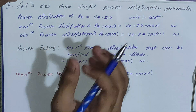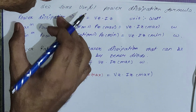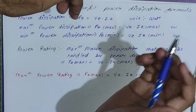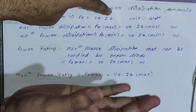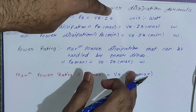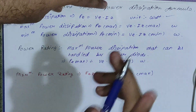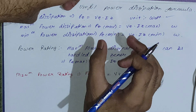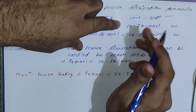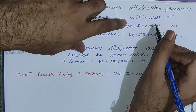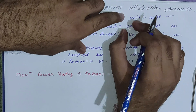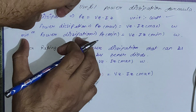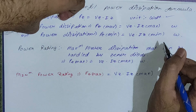Now let's look at useful power dissipation formulas. Power dissipation in any element equals voltage across it multiplied by current through it. For the Zener diode: Pz = Vz × Iz, where Vz is the voltage across and Iz is the current through the Zener. Since Vz is always fixed, for maximum power dissipation Iz must be maximum, and for minimum power dissipation Iz must be minimum.